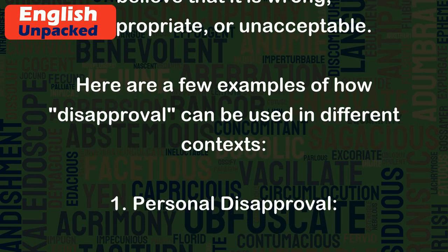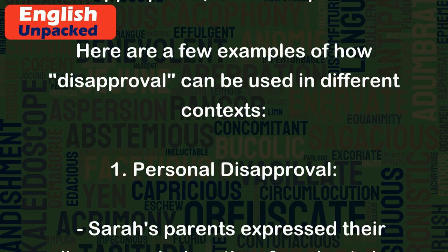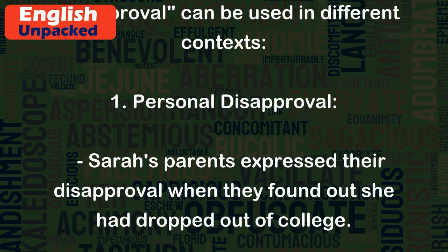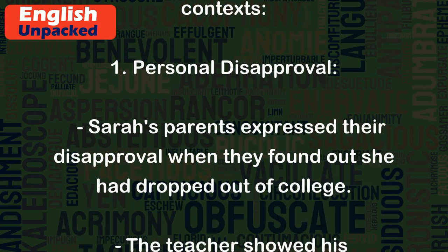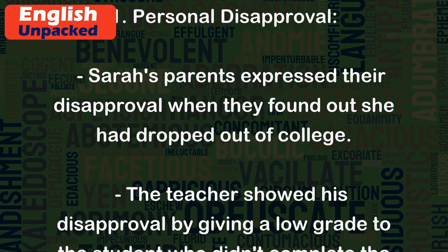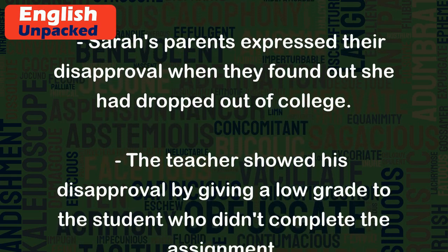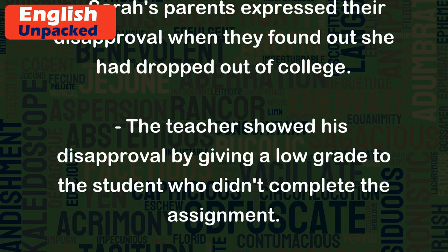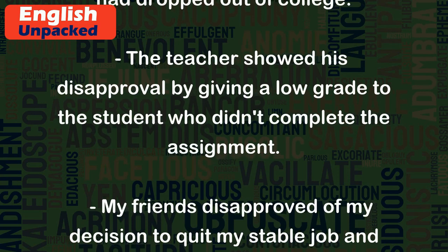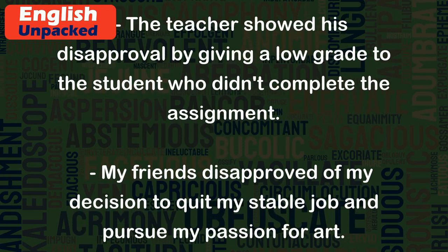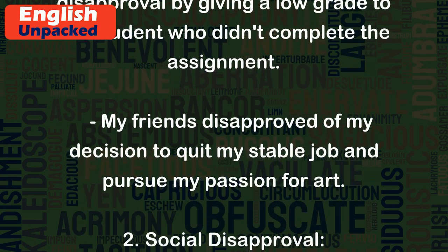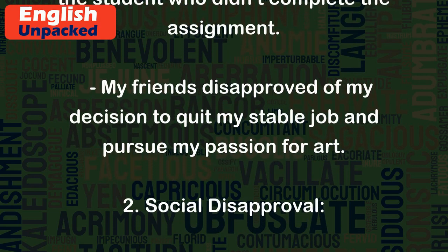Here are a few examples of how disapproval can be used in different contexts. 1. Personal Disapproval: Sarah's parents expressed their disapproval when they found out she had dropped out of college. The teacher showed his disapproval by giving a low grade to the student who didn't complete the assignment. My friends disapproved of my decision to quit my stable job and pursue my passion for art.